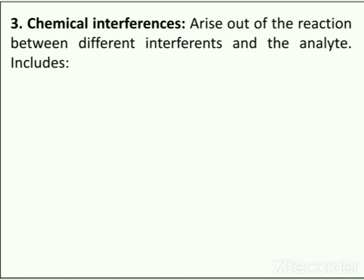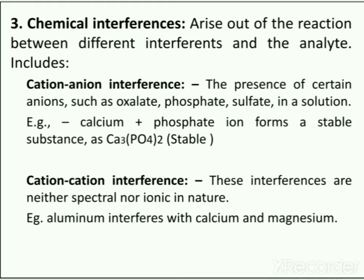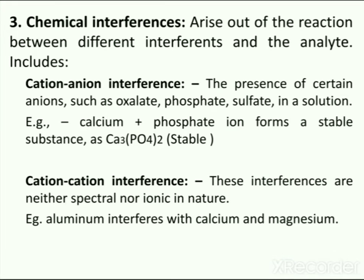Chemical interferences arise from reactions between different interferents and the analyte, and are of two types: cation-anion interference and cation-cation interference. In cation-anion interference, the presence of certain anions such as oxalate, phosphate, or sulfate in a solution may affect the intensity of radiation emitted by an element. For example, calcium plus phosphate ion forms a stable substance Ca₃(PO₄)₂ which does not decompose easily, resulting in production of fewer atoms. In cation-cation interference, mutual interference of cations has been observed, resulting in reduced signal intensity of the element being determined; these interferences are neither spectral nor ionic in nature. For example, aluminum interferes with calcium and magnesium.